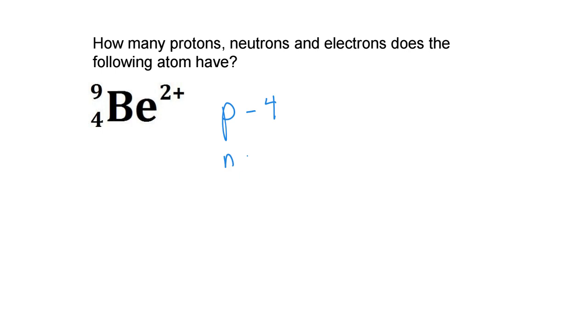And then electrons. Well here I can tell the protons are outweighing the electrons by 2 so there must be 2 electrons so that protons minus electrons gives us a positive 2.